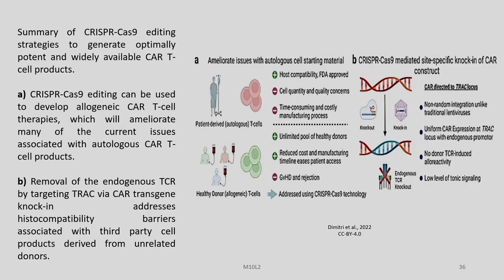This figure presents the summary of CRISPR-Cas9 editing strategies to generate optimally potent and widely available CAR T-cell products. CRISPR-Cas9 editing can be used to develop allogeneic CAR T-cell therapies which will ameliorate many of the current issues associated with autologous CAR T-cell products like host compatibility, FDA approval, and cell quantity and quality concerns, time-consuming and costly manufacturing process.